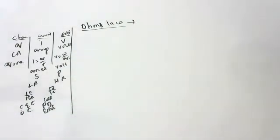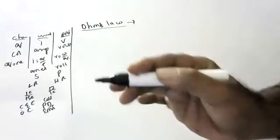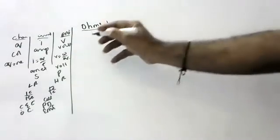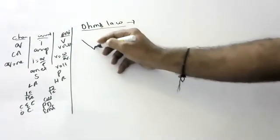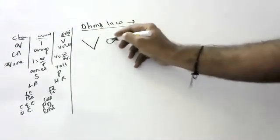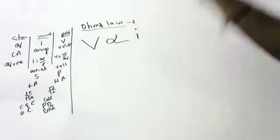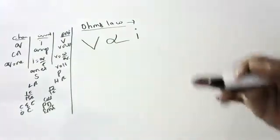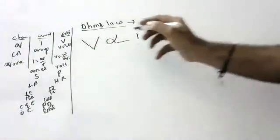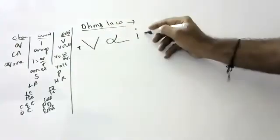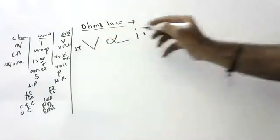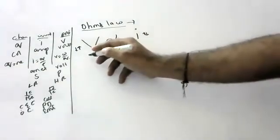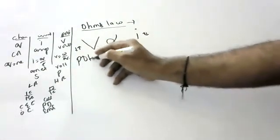Today we are going to discuss Ohm's Law. Ohm's Law states that the potential applied is directly proportional to the current flowing in a conductor. If you use a bigger battery, more current will flow; with a smaller battery, less current will flow.